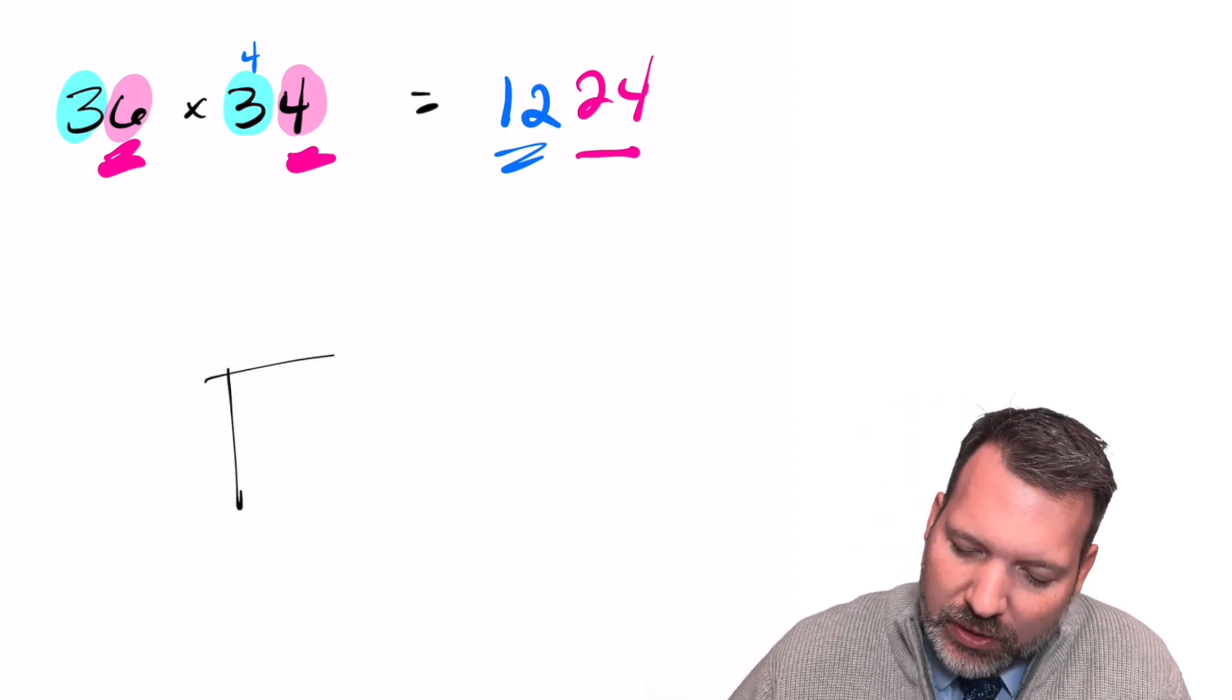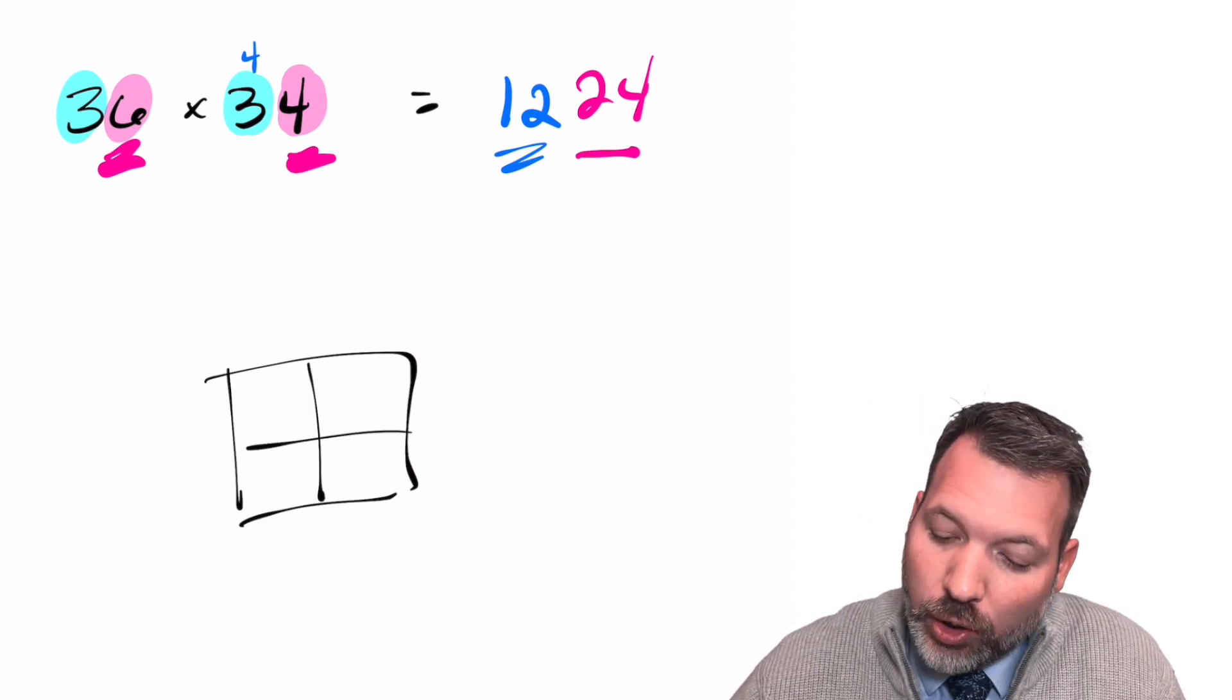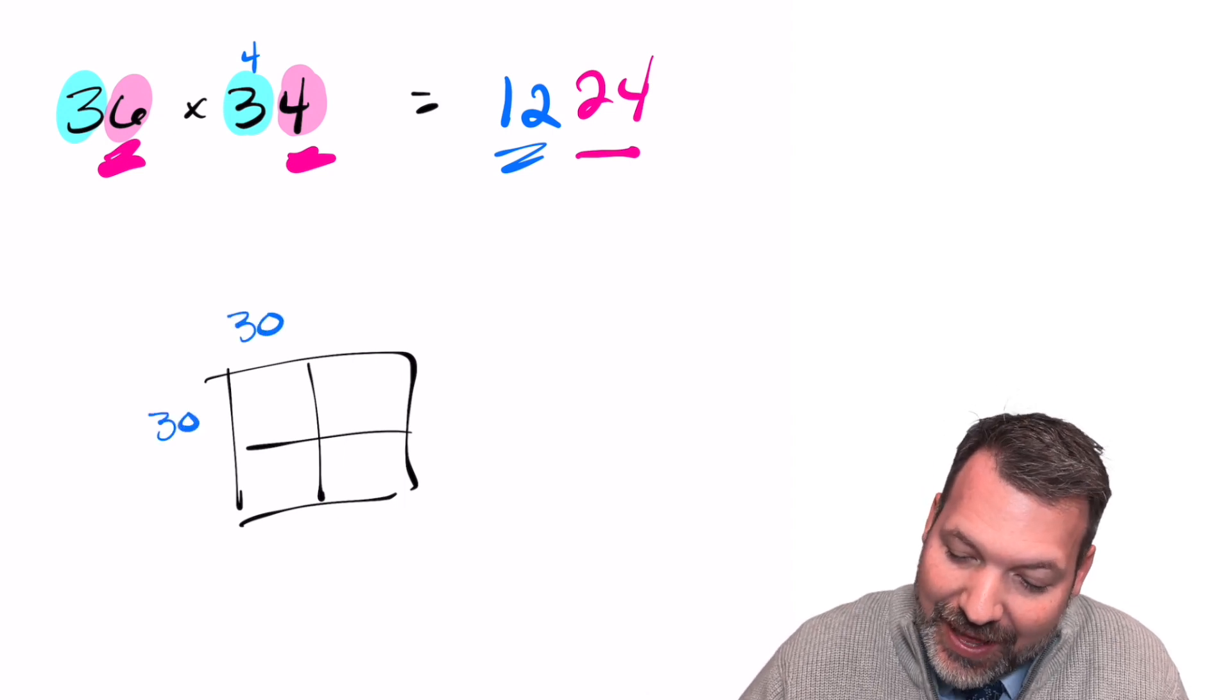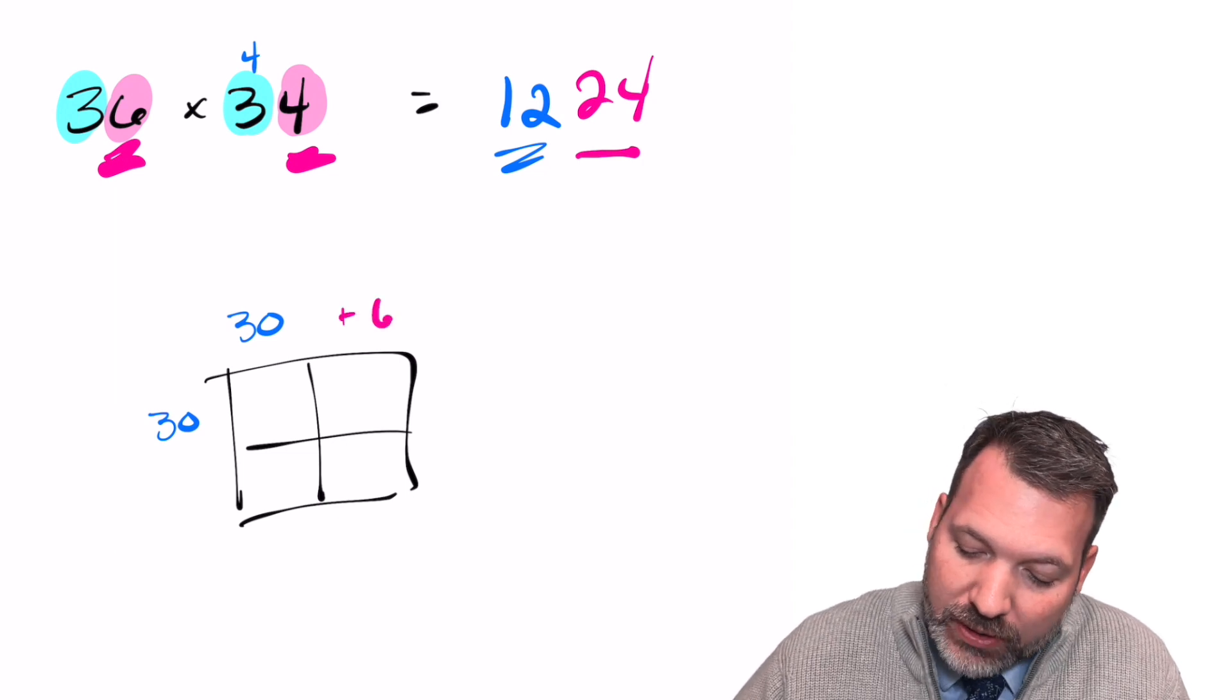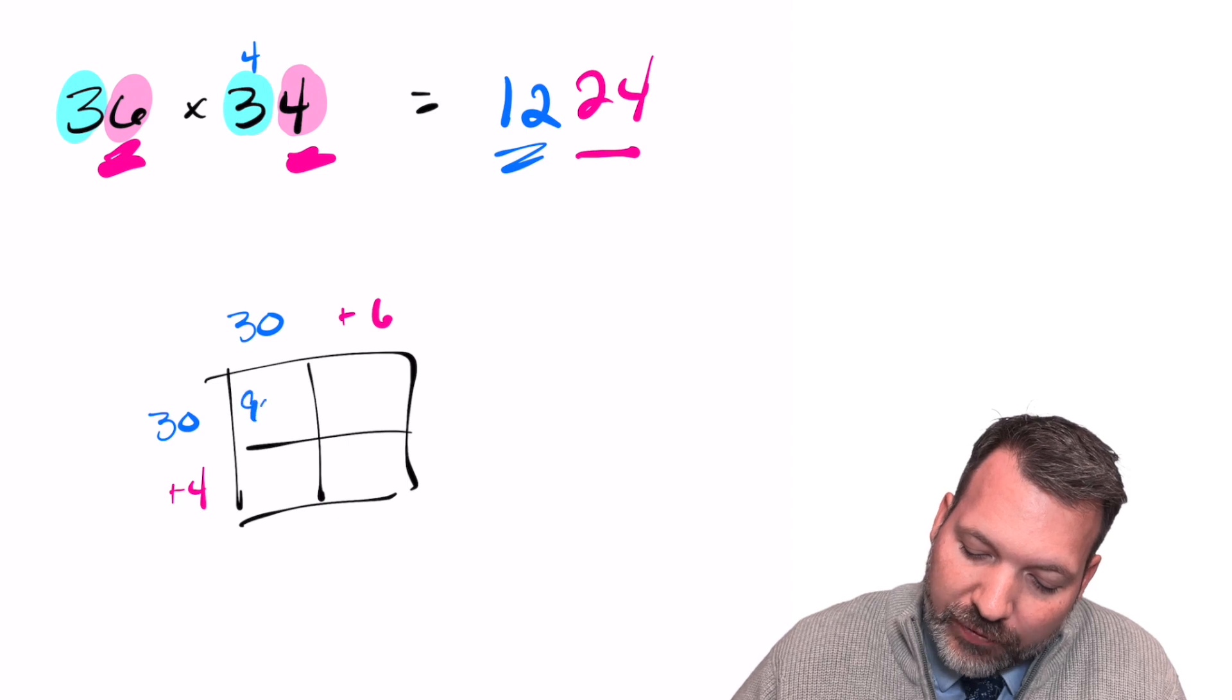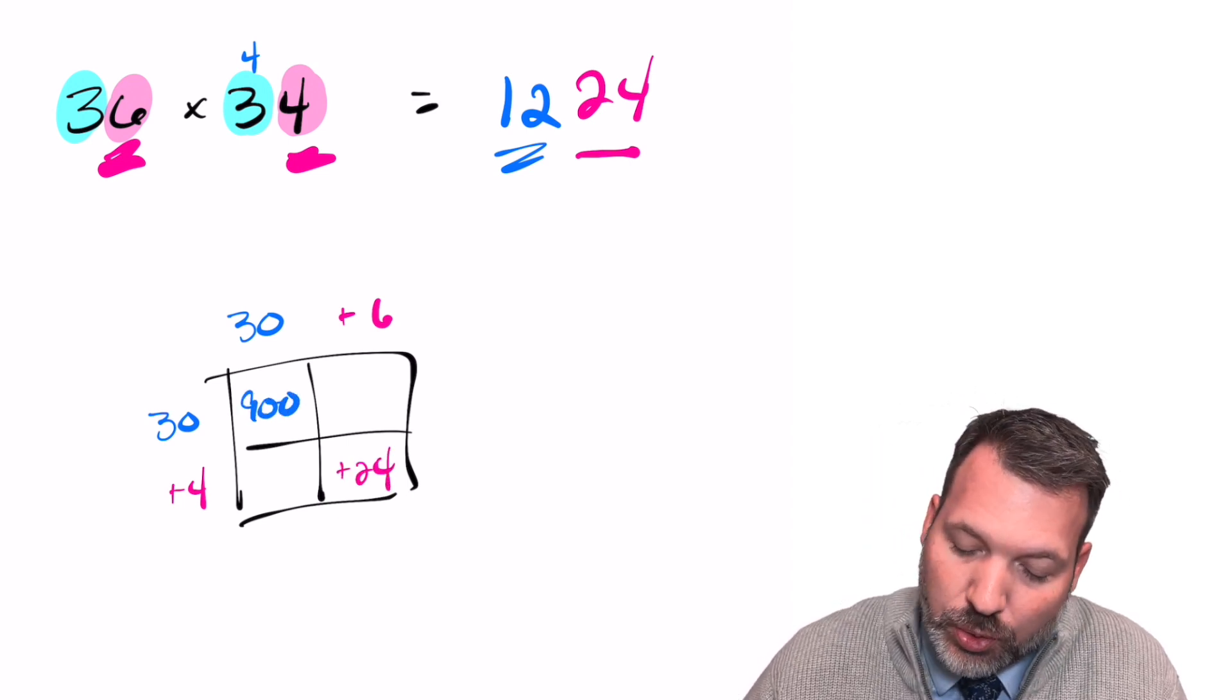And one way we might start to analyze that is using an area model for multiplication. We're going to represent these numbers 36 and 34 split into their tens digit portion, that would be 30 in both cases, and then the ones digit portions. That's the six and the four. When we multiply it out this way, of course, 30 times 30 is 900. And of course, four times six is 24.